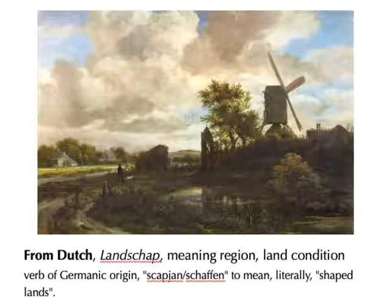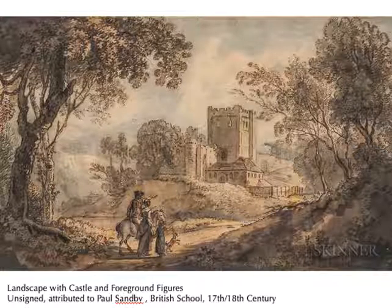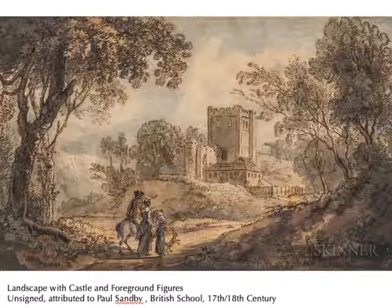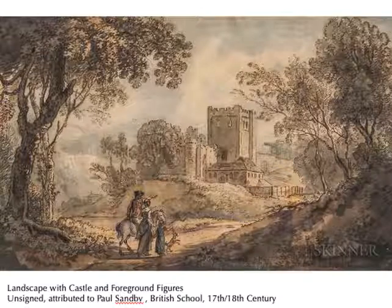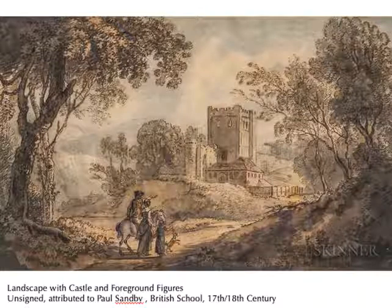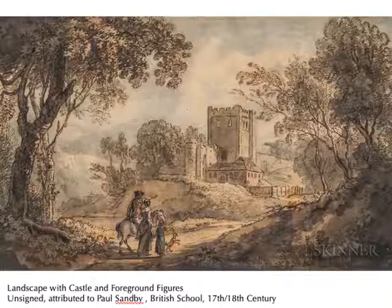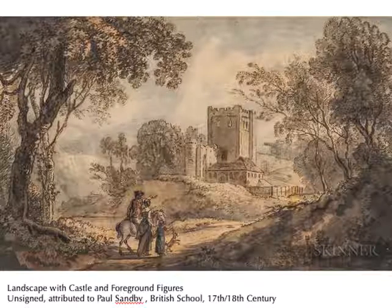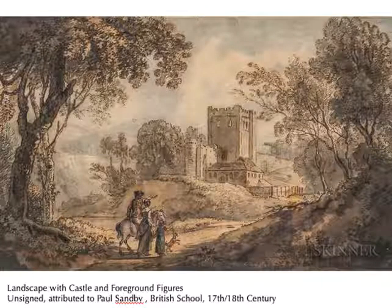Later, when the word enters English, it carries with it that association with painting. Landscape, in the British sense, means a picture depicting scenery on land. Interestingly, 30 or 40 years pass after the first recorded use of landscape in English before the word is ultimately used to mean a view or a vista, some sort of natural scenery. This delay suggests that people were first introduced to landscapes — or the idea of landscapes — in paintings, and then began to see landscapes in real life.